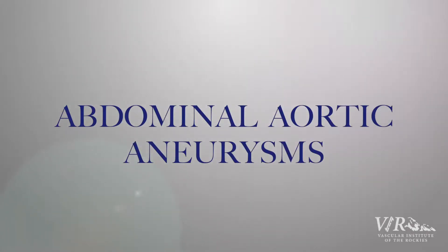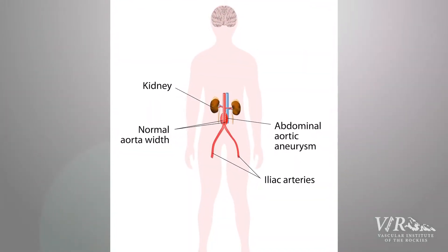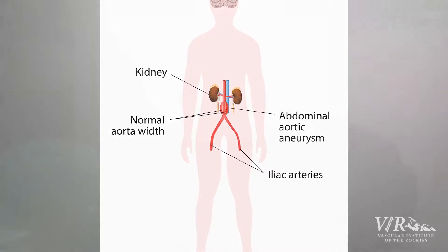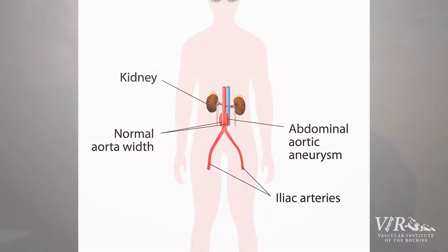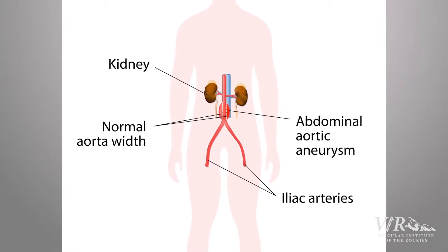An abdominal aortic aneurysm is a dilation of the aorta, usually somewhere below the kidney vessels. Some of them may not be of any clinical consequence — if your aorta gets to only three or four centimeters, it's probably not going to cause any issue. But when the aorta gets to around five to five and a half centimeters, then we worry and we think about repairing it.